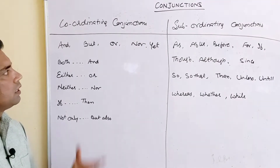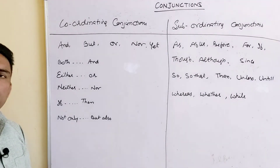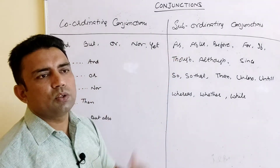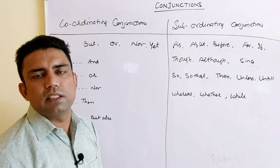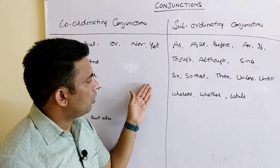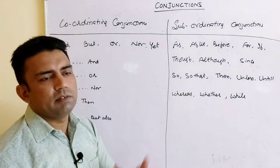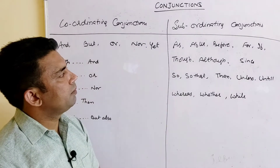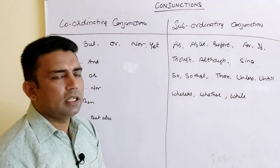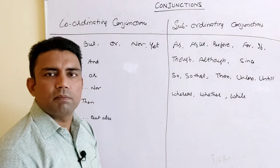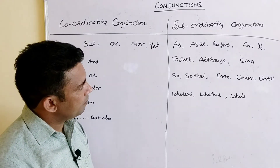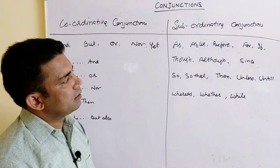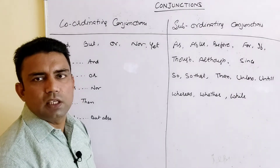Those are the coordinating conjunctions. For subordinating conjunctions: 'as' is used to give a reason — 'The boy got failed as he was not studying properly.' 'After' and 'before' indicate time — 'He will come after 2 p.m.,' 'he will come before 2 p.m.' 'For' is also used for a reason, especially in poetry.